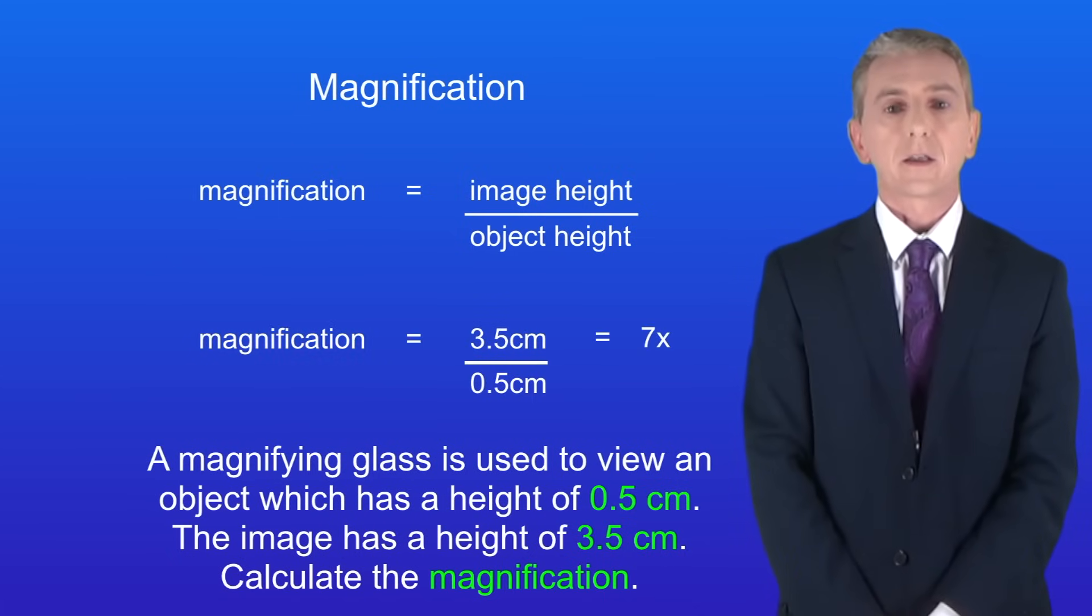Okay the magnification is the image height divided by the object height. In this case the image height is 3.5 cm and the object height is 0.5 cm. Dividing 3.5 by 0.5 gives us a magnification of seven times.